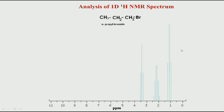Now let us start analyzing spectra. In today's class, we will look at a few examples of molecules where we already know the structure. Our goal is to figure out which hydrogen corresponds to which peak. The first step is to know the molecular formula. If I know there are 3 carbons and 7 hydrogens, that is enough. Today we will see, given a structure, how we interpret the data.